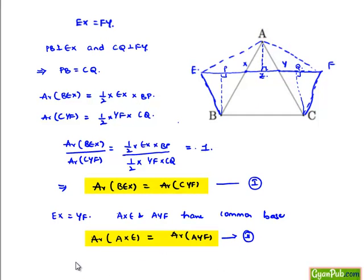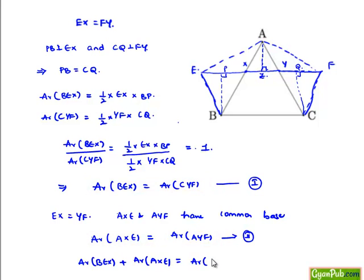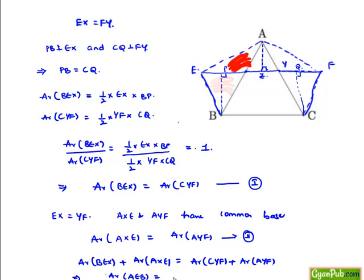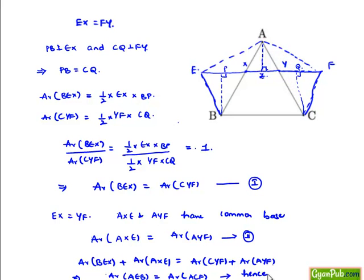Now by adding equations (i) and (ii), area of triangle BEX plus area of triangle AXE equals area of triangle CYF plus area of triangle AYF, which implies area of triangle ABE is equal to area of triangle ACF. This is the required proof, and hence it is proved.